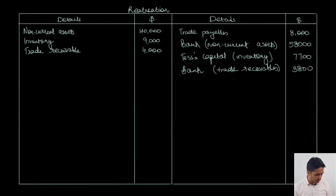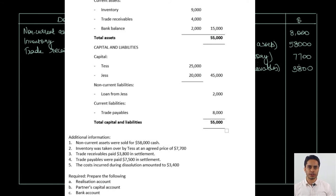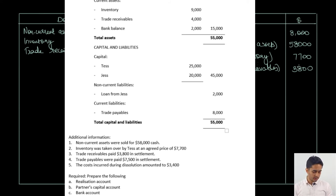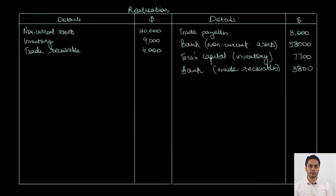Adjustment number 4 says trade payables were paid 7,500 in settlement. Whenever liabilities or expenses are paid, that is recorded on the debit side of the realization account, so on the debit side we write bank (trade payables), 7,500. The realization expenses or dissolution expenses were 3,400 — again on the debit side as bank (dissolution expenses), 3,400.